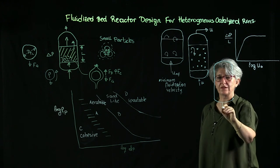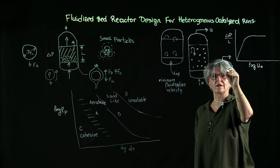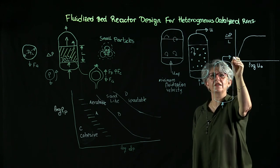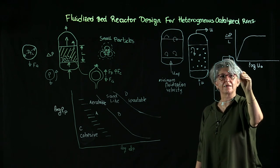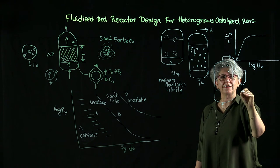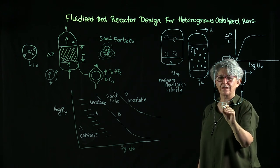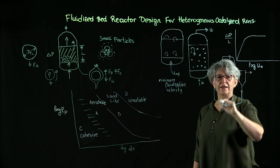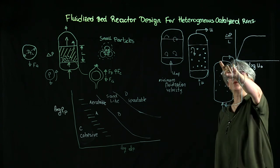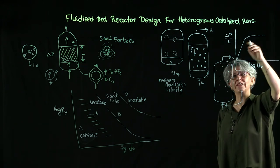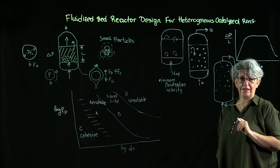After the minimum fluidization velocity, we encounter several stages of bed behavior until we have the full entrainment of the bed, with particles moving with the fluid. For certain types of reactions this is a desired aspect — we take the particles, separate them from the fluid, and send them back to the reactor with the incoming fluid. This is the principle used in fluidized bed catalytic cracking in refinery operations.